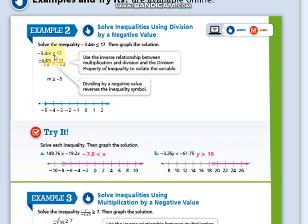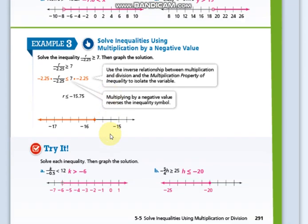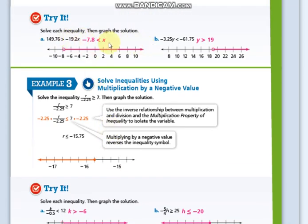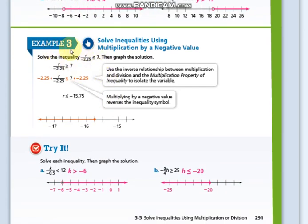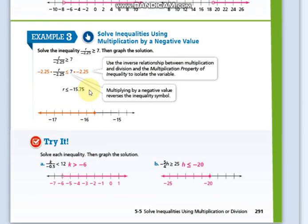It was less or equal, it became greater or equal. Don't forget that. Here you are going to try it by your own. We have another example here. In order to isolate the R, I need to do the inverse, which is multiplication.